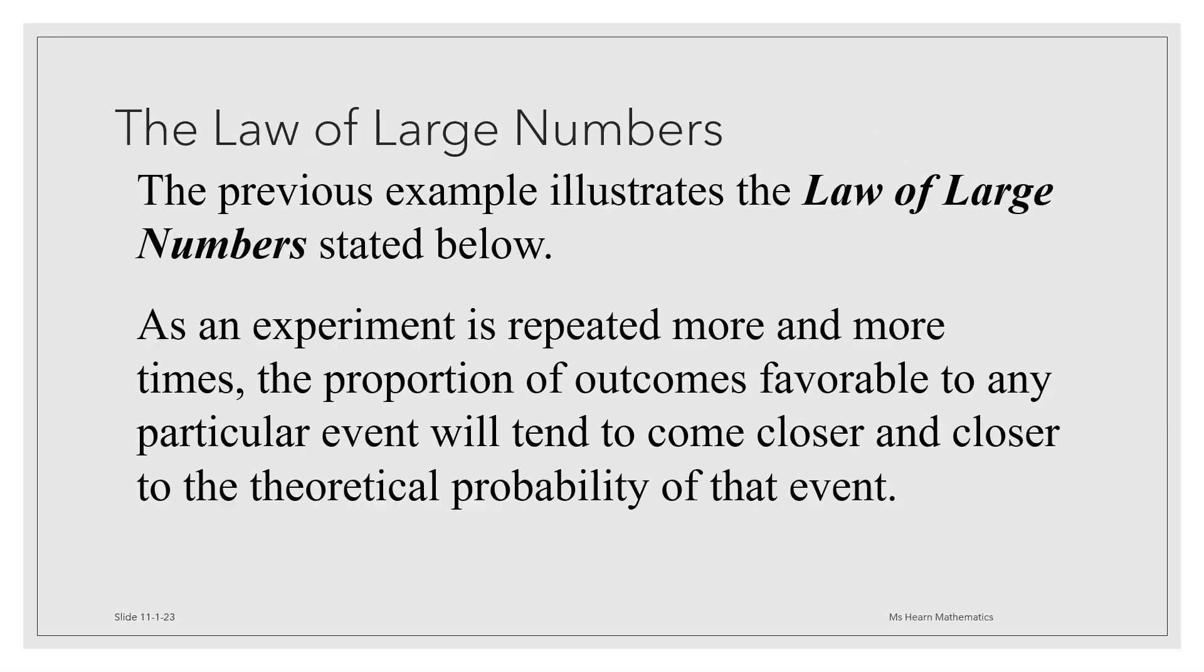The previous example illustrates what's called the law of large numbers. And it tells us that as an experiment's repeated more and more times, the proportion of outcomes favorable to any particular event will tend to come closer and closer to the theoretical probability of that event.